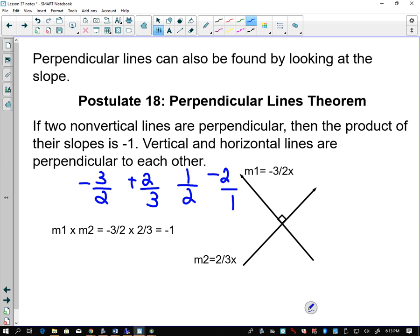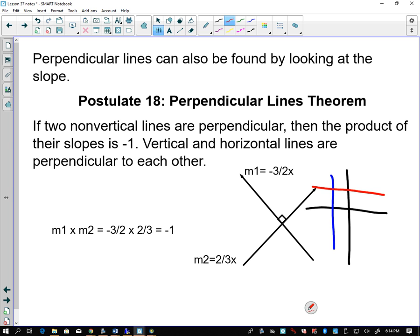Those two slopes are perpendicular to each other. If we had positive 1 half and we wanted a perpendicular slope, we'd get 2 over 1 or 2, and we'd make that negative. If we had something like negative 4, then the opposite reciprocal is going to be 1 fourth. Vertical and horizontal lines are perpendicular to each other. If I've got a vertical line and a horizontal line, they're going to meet at a right angle every time. So they're going to be perpendicular to each other.